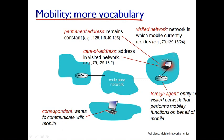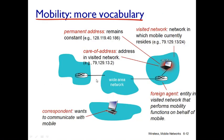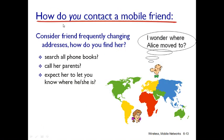The foreign agent will issue one address for the mobile user in this network, and this address is called a care-of address. At the same time, the foreign agent will contact the home agent and inform it of the care-of address of the mobile node, saying that your mobile user is in my area. At the end, both the home agent and foreign agent will know about the presence of the mobile node.